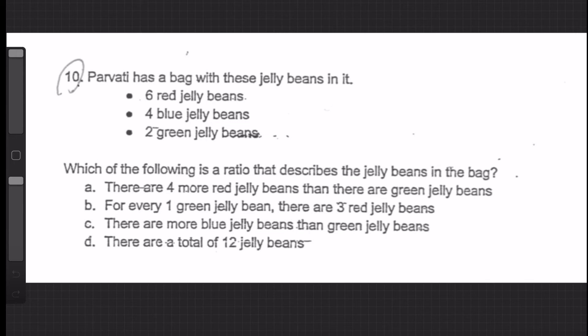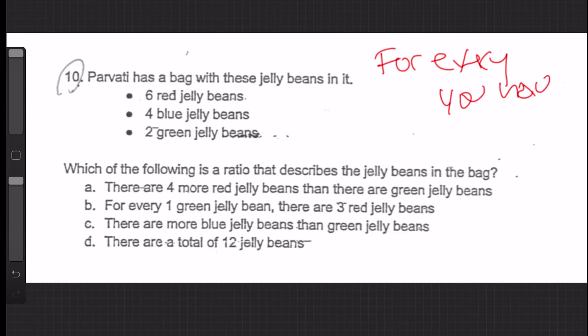Question ten. Parvati has a bag with six red jelly beans, four blue jelly beans, and two green jelly beans. Which of the following is a ratio that describes the jelly beans in the bag? All of these may be true statements, but only one is set up in the format of a ratio — for every something, you have something.